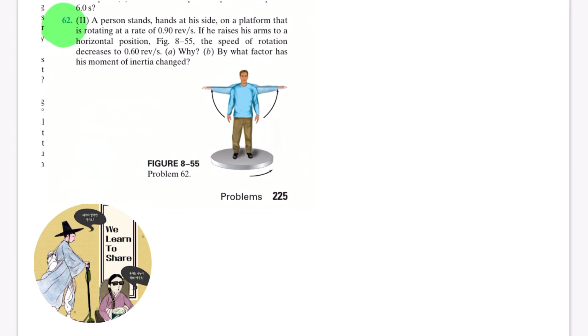So let's read the question. A person stands, hands at his side, on a platform that is rotating at a rate of 0.9 revolutions per second. If he raises his arms to a horizontal position, like figure 8-55, the speed of rotation decreases to 0.6 revolutions per second. Part A: Why? And Part B: By what factor has his moment of inertia changed?